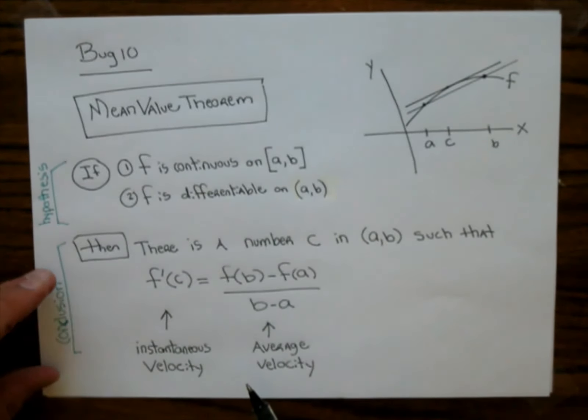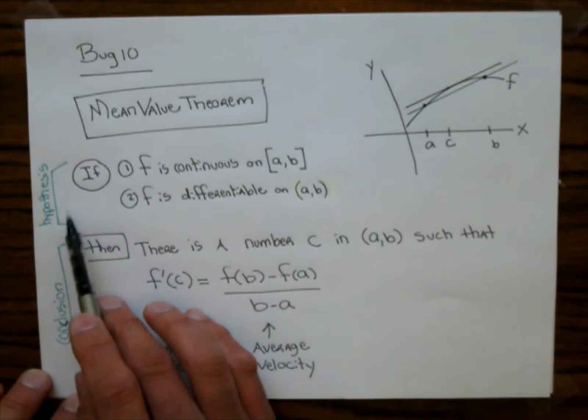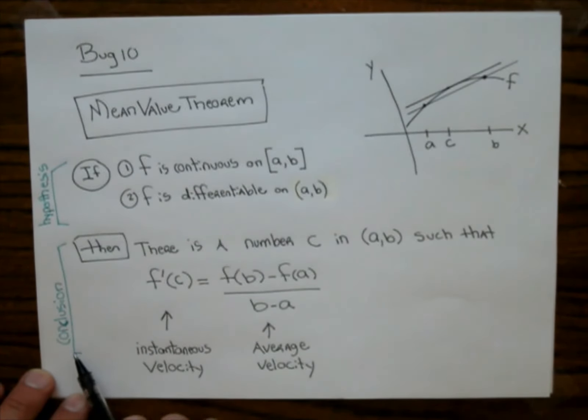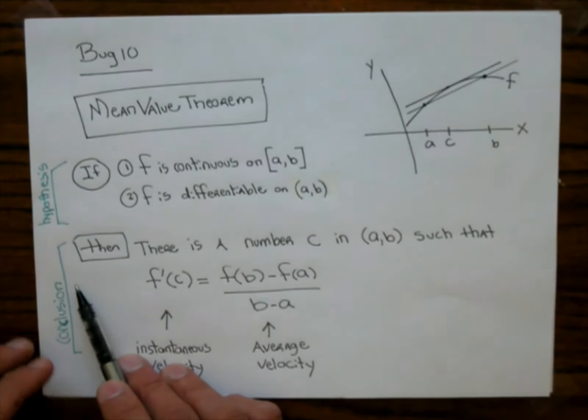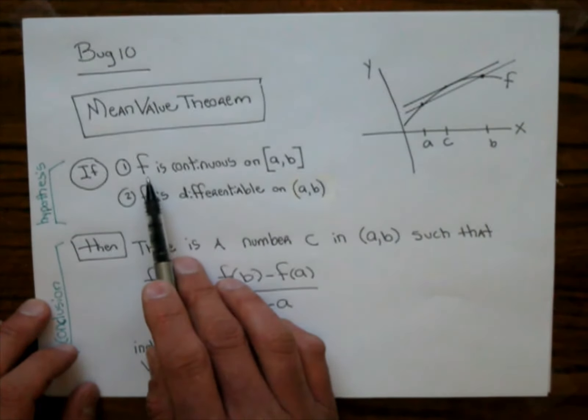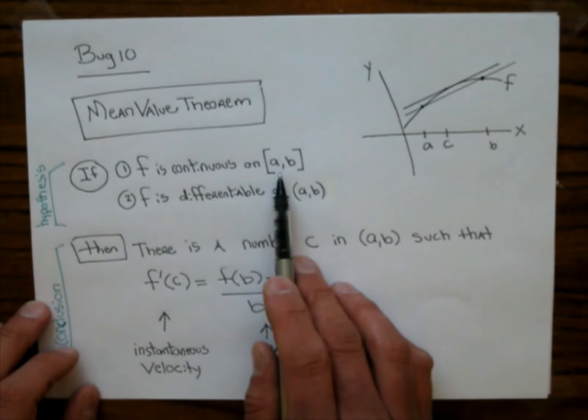These if-then theorems have the if part, which is sometimes called the hypothesis, and the then part, which is called the conclusion. So what does this theorem say? It says if you have a function f, which is continuous on a closed interval a to b,